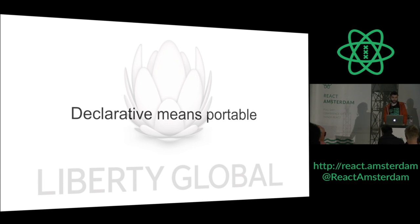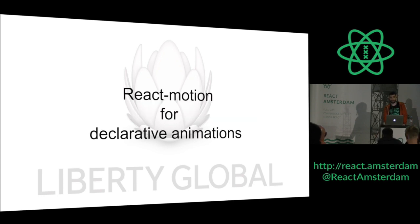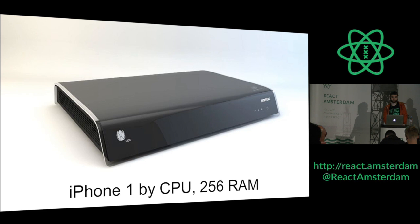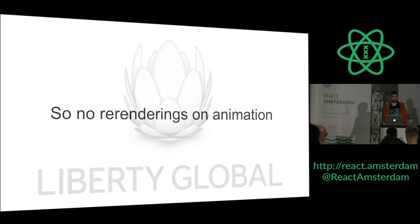Declarative means portable. We also use React Motion to keep animations declarative. It's cool, but the problem is that these boxes are comparable to an iPhone 1st generation and the browser process has only 250 megabytes of RAM — it hurts a lot, to be honest. Modern mobiles have way more CPU. So we try to keep it really performant and we do a lot of tricks on how to manage renderings during animations and avoid updating the whole React tree.